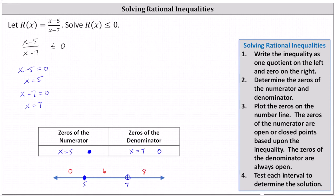Let's first test x equals 0. When x is equal to 0, the left side is negative 5 divided by negative 7, which simplifies to 5 sevenths. We have 5 sevenths less than or equal to 0, which is not true — 5 sevenths is not less than or equal to 0. Because the test value is false, the entire interval on the left is also false.